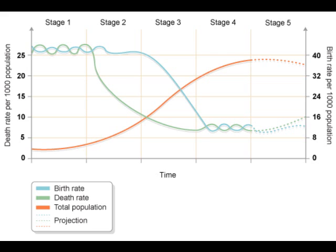The birth rate begins to decrease because there is improved medical care, lower infant mortality, greater women's rights, and contraception becomes more available and more women know how to use it. The death rate is also falling due to improved investments in sanitation and healthcare.